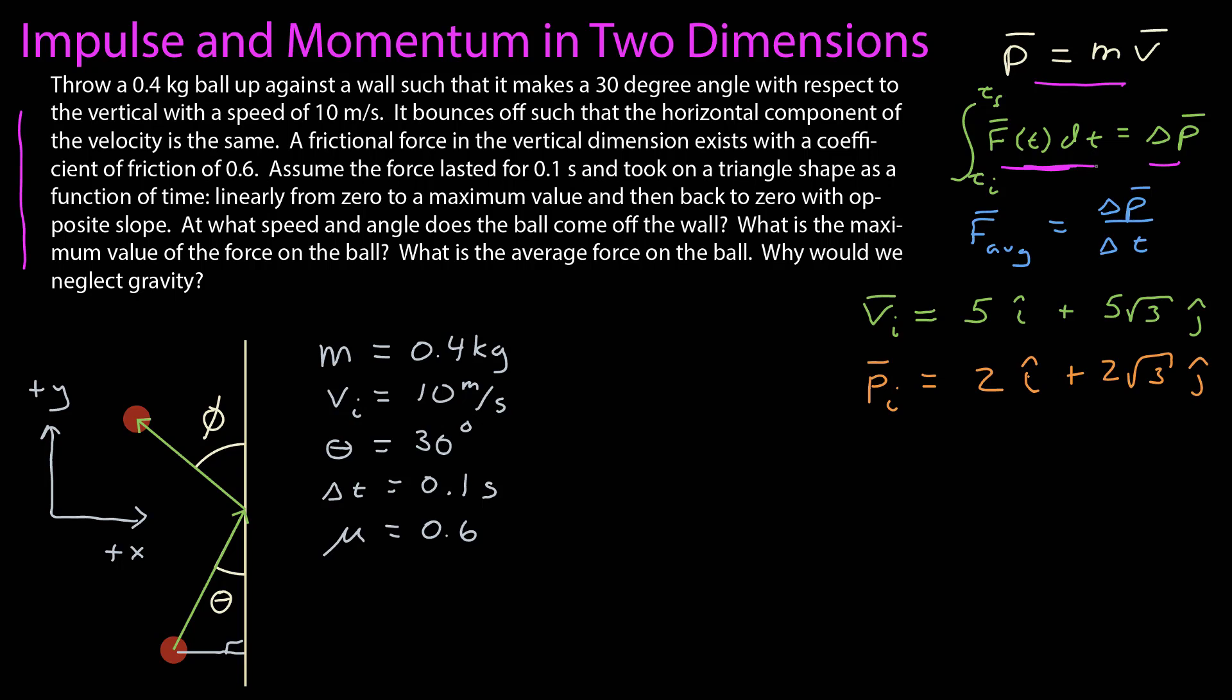I'm given the angle at which it hits the wall, so if I draw a line here so that it makes a right angle, I can find the components of the velocity, which is the magnitude of the velocity sine theta in the x direction, and then cosine theta in the y. You can see if I translate that vector to tails at my coordinate system, I can see that both the x and the y component are positive.